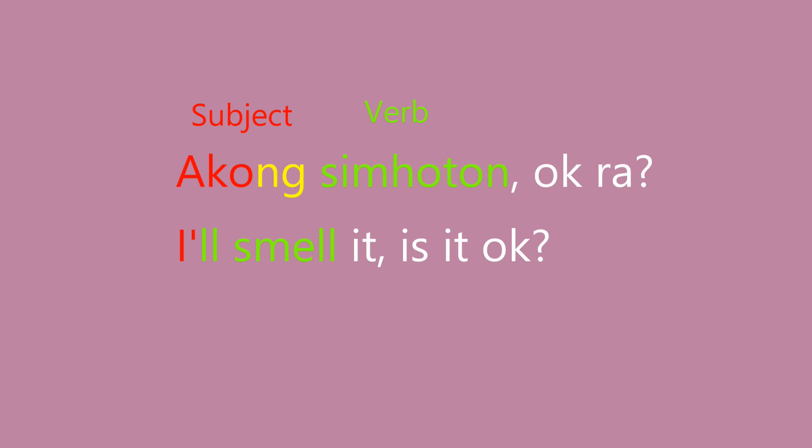If you don't put the 'nga' linker here, it sounds broken and you might not be understood clearly. So, 'akung' — there should be the 'nga' linker here. 'Akung' means I, and 'simhoton' means will smell. There is a suffix '-on' attached to the verb. The root word is 'simhot,' and 'simhoton' means will smell.